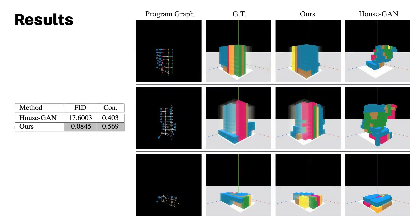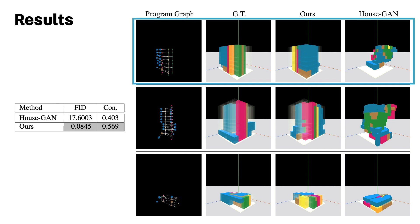Our results outperform HouseGAN both on the FID score and connectivity accuracy. Qualitatively, we can also see that Building GAN generates valid volumes whereas HouseGAN suffers from inter-story and cross-story alignments.